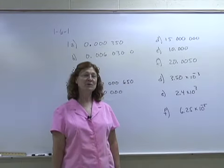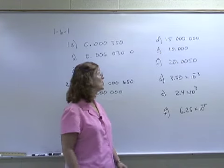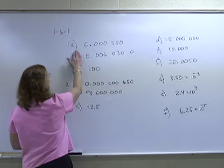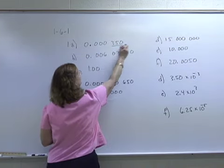In number one, we have to determine how many significant digits are in the numbers. So I look at A and these zeros are placeholders, so only the last three are significant.